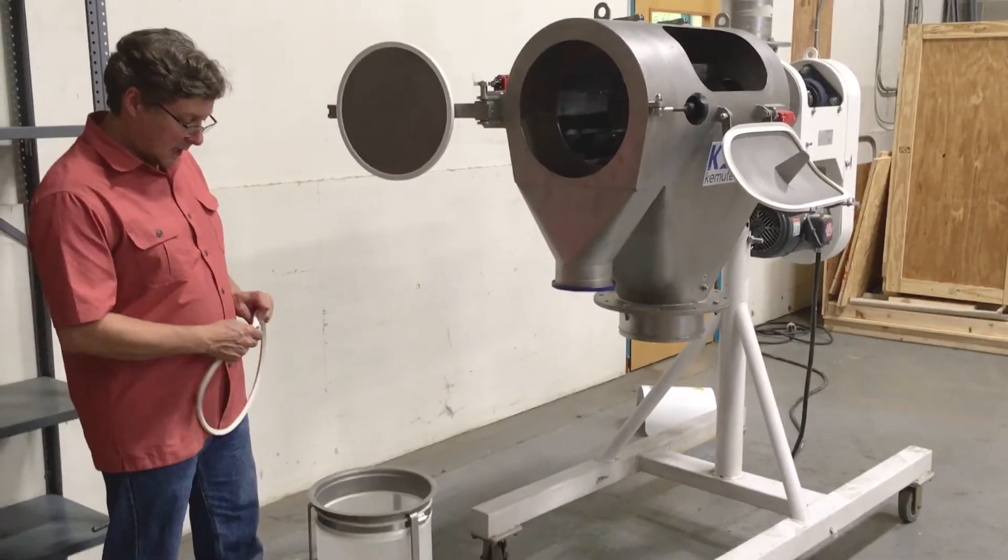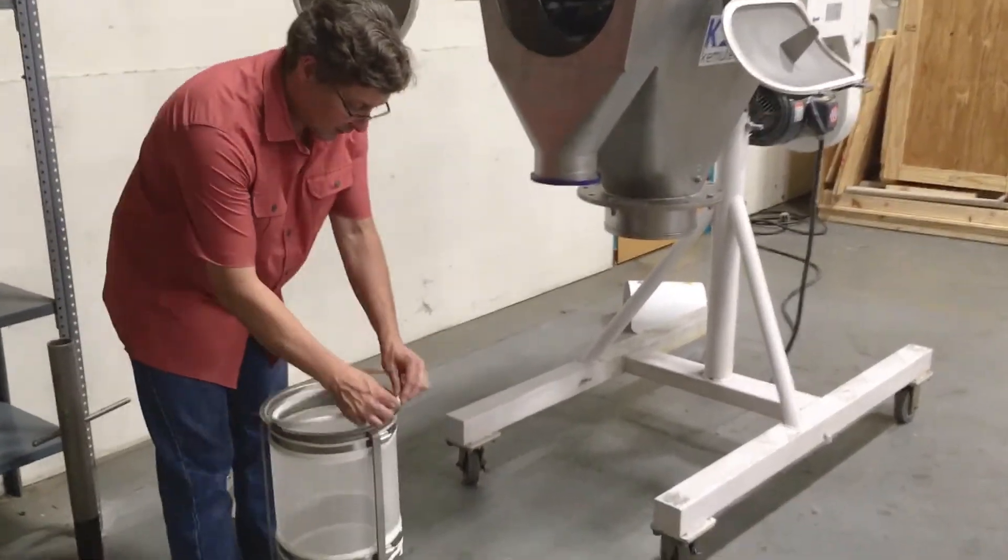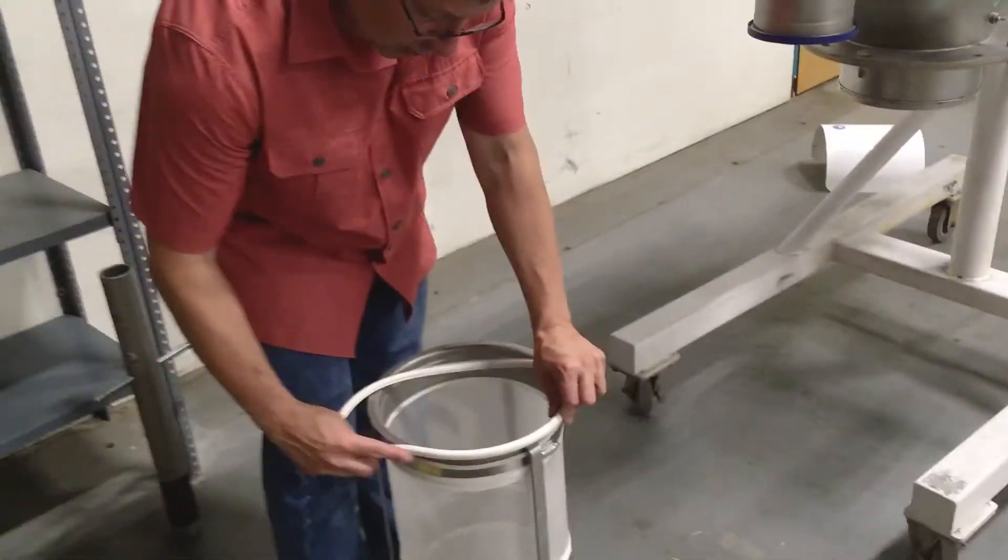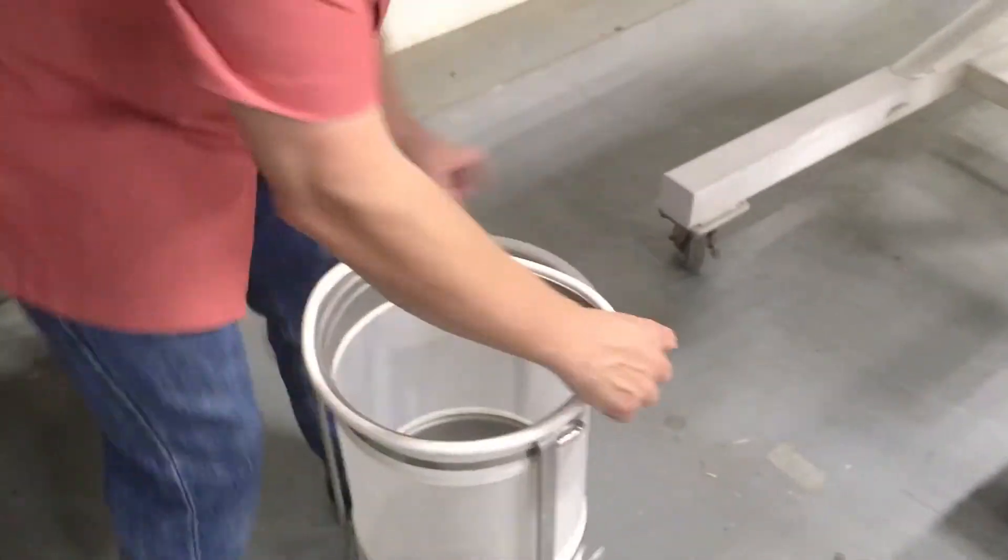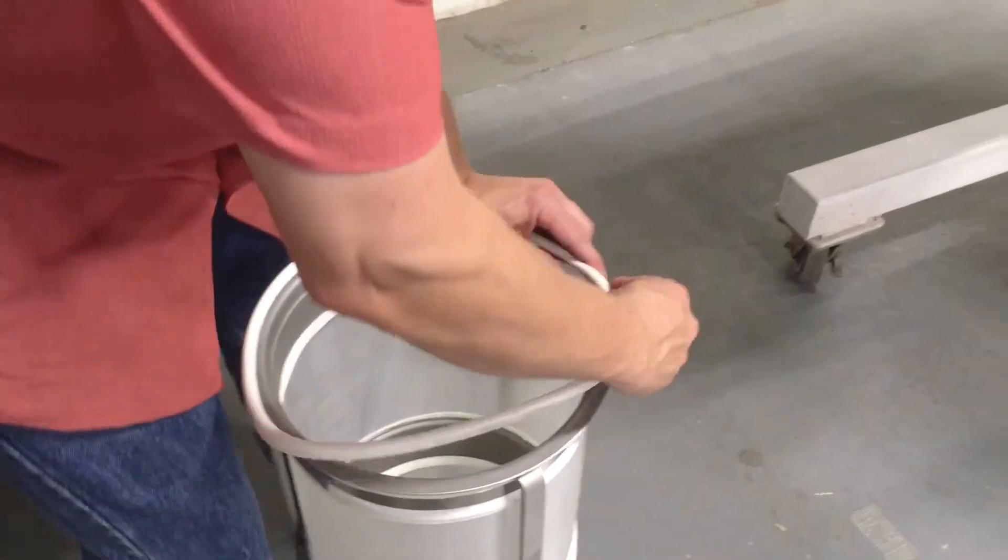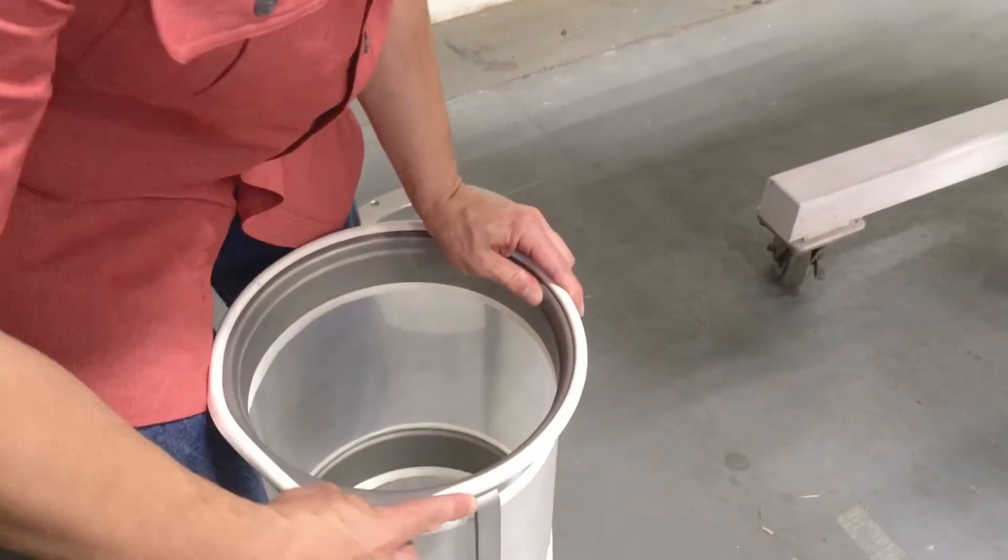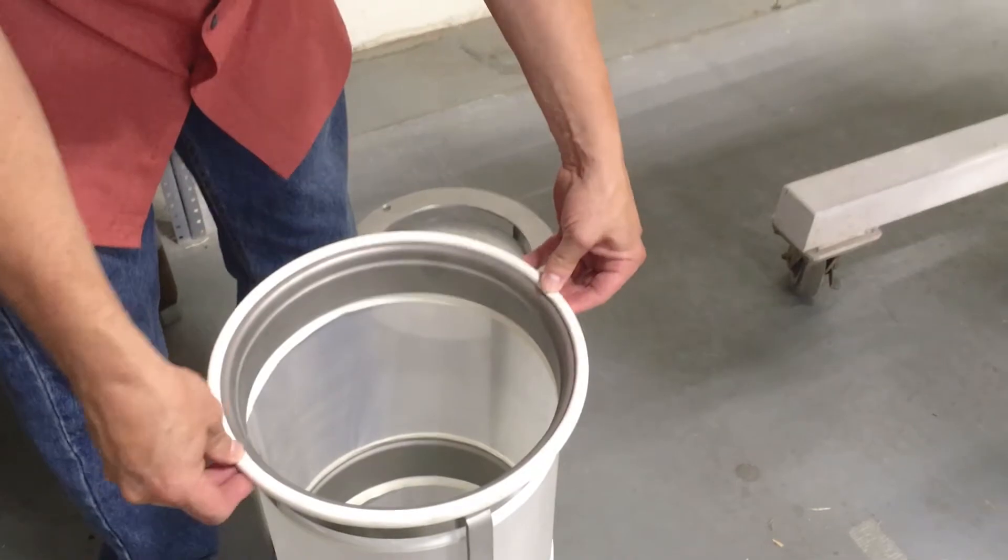Now we're going to start reassembling the basket. We put the gasket on again, making sure that the D section, the compressible part of the gasket, is facing outwards. That's correct.